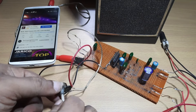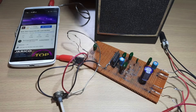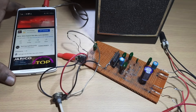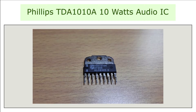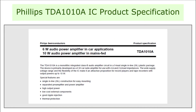Welcome to my channel Learning Electronic Circuits. Today I am going to talk about an audio amplifier based on the TDA-1010A IC. It is a monolithic integrated class B audio amplifier circuit packed in a 9-pin single inline package. The IC has an extended cooling fin on the top side that provides heat dissipation. It gives an output power of about 6 to 10 watts maximum depending on the input voltage, and delivers it to a 4 ohm or 2 ohm speaker respectively.